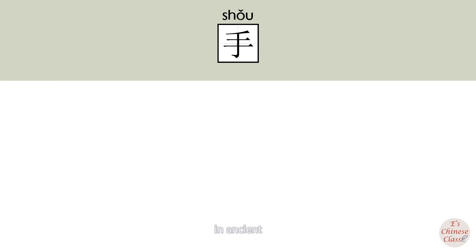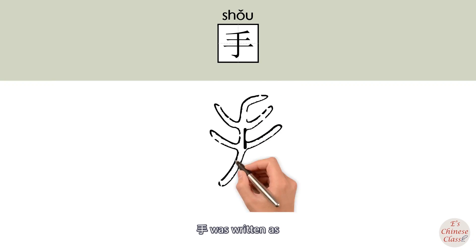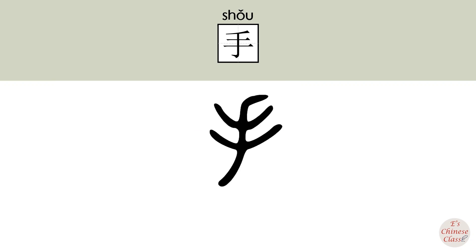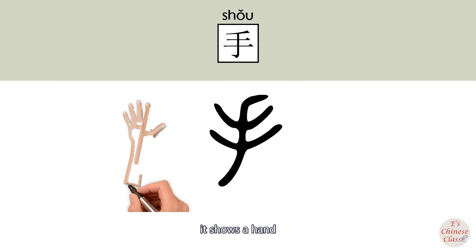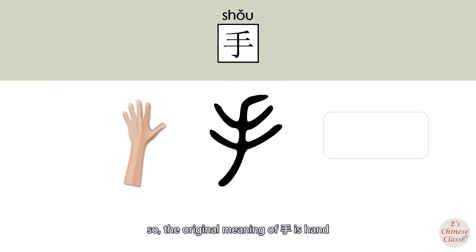In ancient Chinese, 手 was written in a form that shows a hand. So the original meaning of 手 is hand.